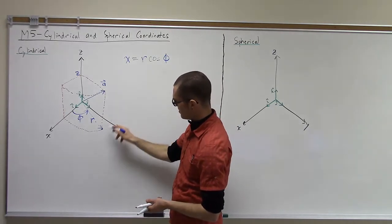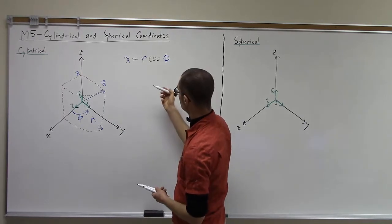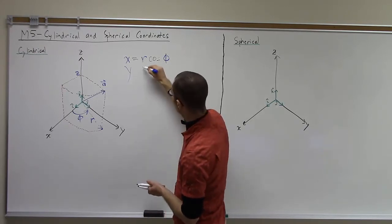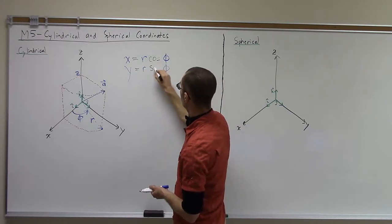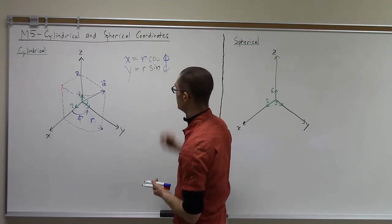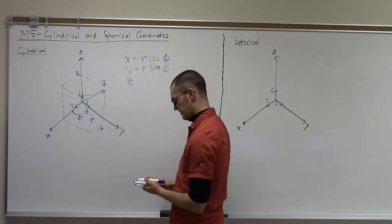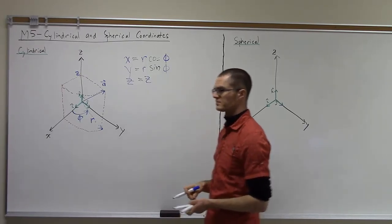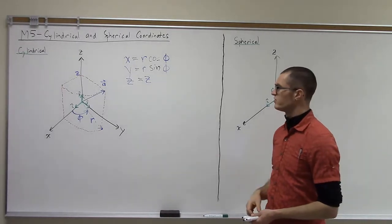And then by the same token, y is the sine at that angle. So I can say y is r sine of phi. And then, as I mentioned earlier, the z-coordinate in this system is the same as it would be in a Cartesian coordinate system. Okay, so that's a cylindrical coordinate system.